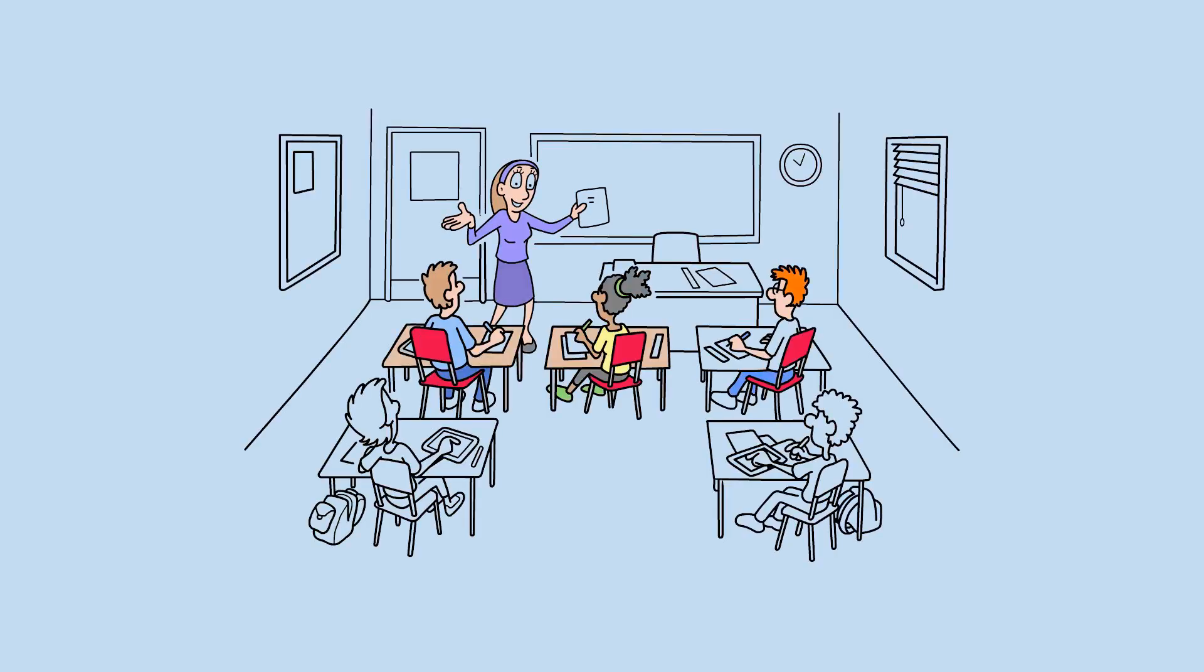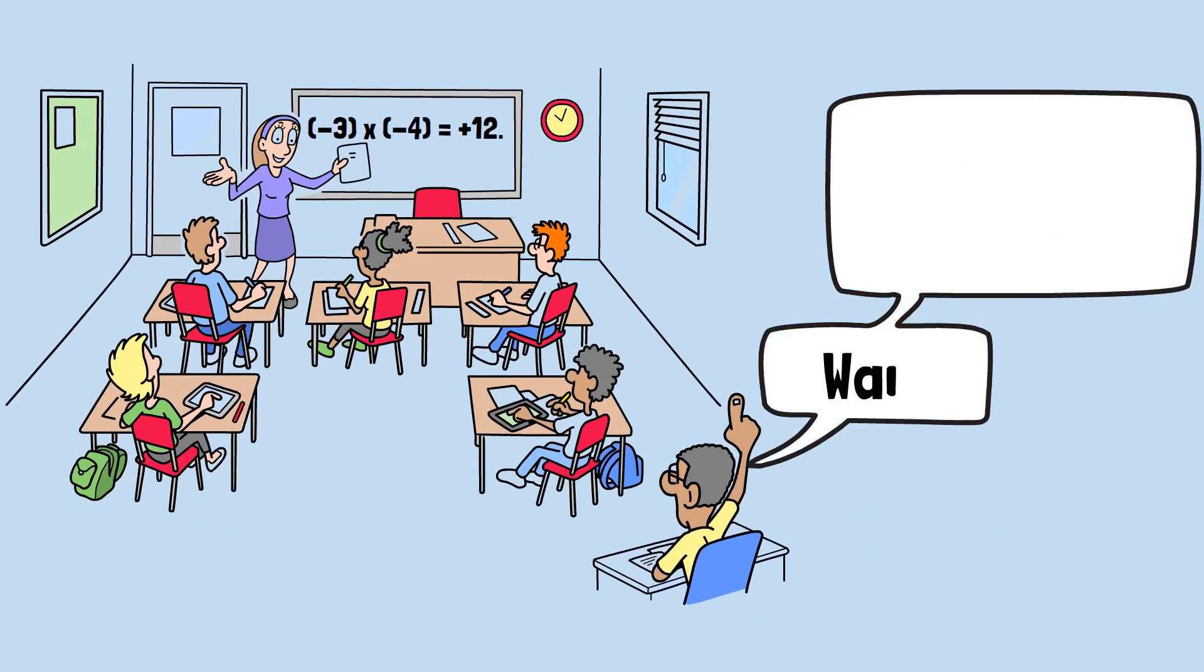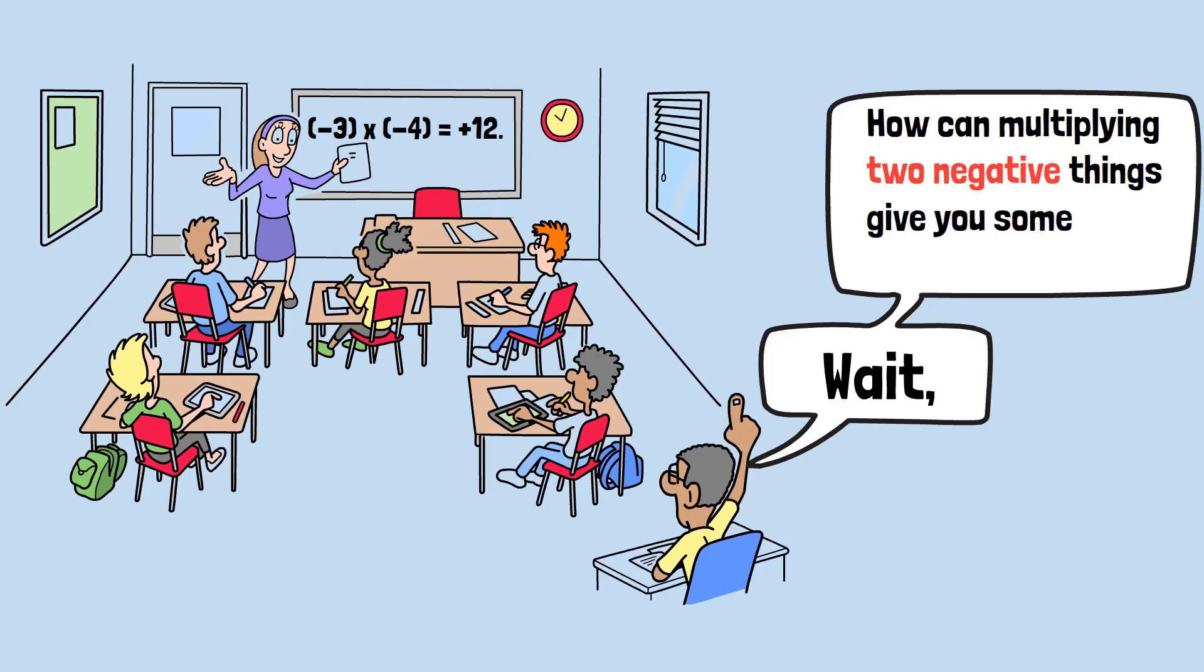You're sitting in an algebra class when your teacher writes down something that makes your brain short-circuit. Negative three times negative four equals positive twelve. Your hand shoots up immediately. Wait, you say, how can multiplying two negative things give you something positive? That doesn't make any sense.